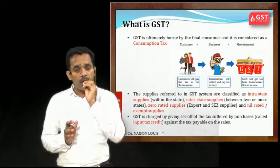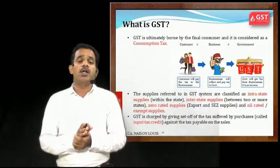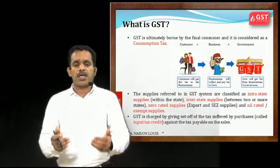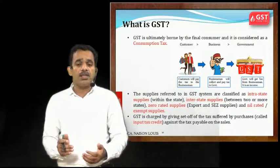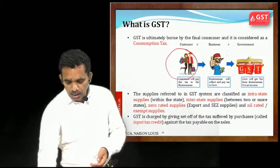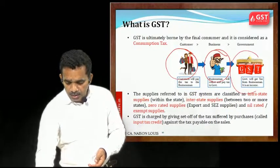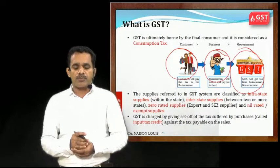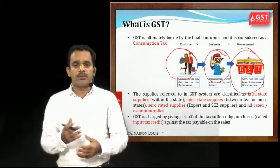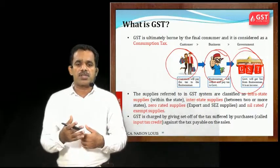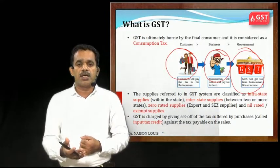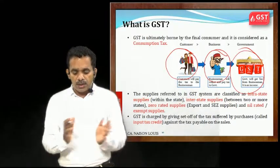GST is ultimately borne by the final consumer. All customers, whenever they purchase any goods or services, need to pay GST. In the transaction flow: a customer pays GST to the business person when receiving goods or services, and the business person then pays this tax to the government — that is the flow.